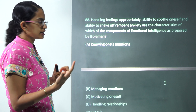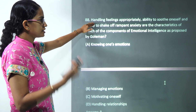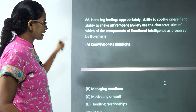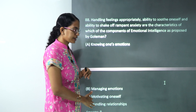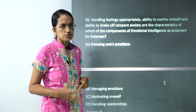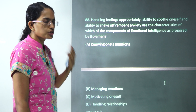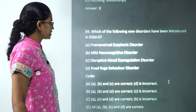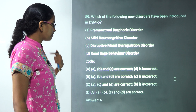The next question covers Goleman's emotional intelligence. Handling feelings appropriately, the ability to soothe oneself, and the ability to shake off rampant anxiety are all characteristics of 'managing emotions' under Goleman's framework. Every time you have a question on Goleman's emotional IQ or emotional intelligence, make sure you cover the different categories and their corresponding points very carefully.